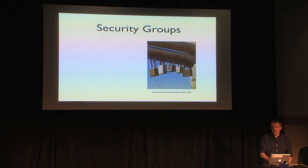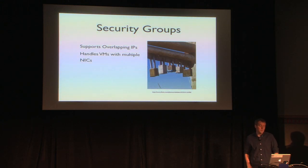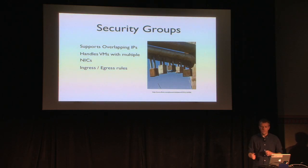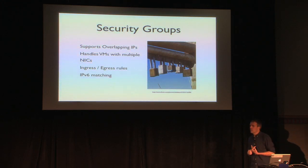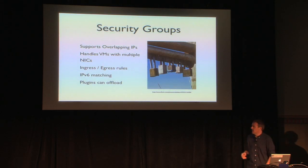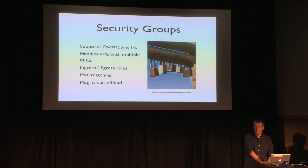We added security groups. The concept existed before in Nova, but we brought them into Quantum. They support overlapping IPs, which Nova did not before. They handle VMs with multiple NICs, so you can apply security groups to different interfaces for different requirements. We also added both ingress and egress rules — previously in Nova you were only allowed egress rules. And we added IPv6 matching. One of the benefits of adding security groups in OpenStack networking is that plugins can offload the processing. Previously Nova did it via IP tables; now where the infrastructure exists within the plugin, they can apply the rules much higher up.